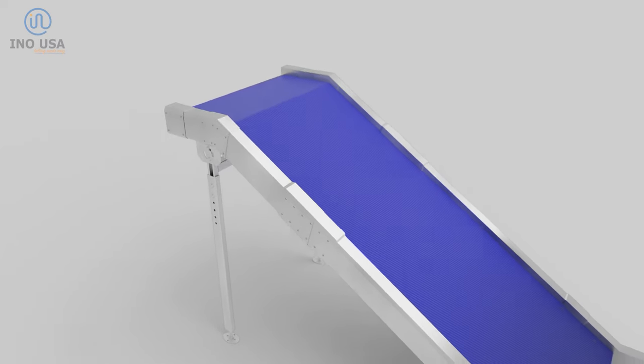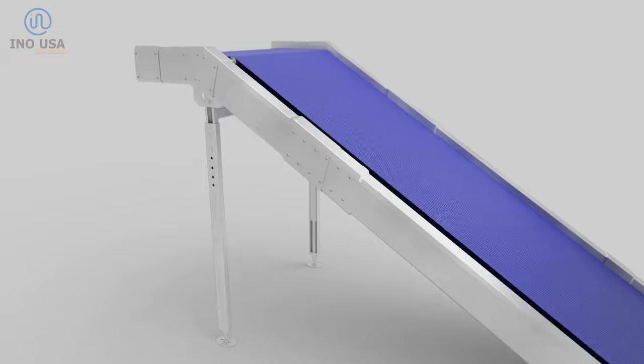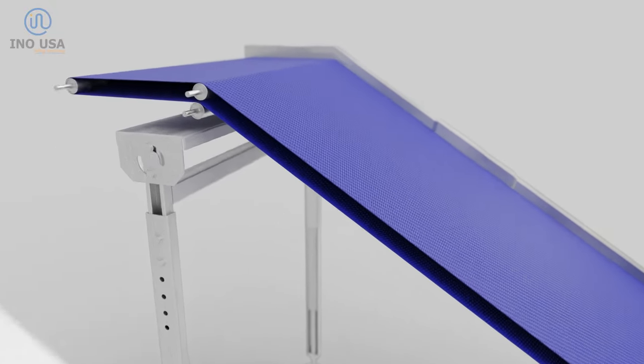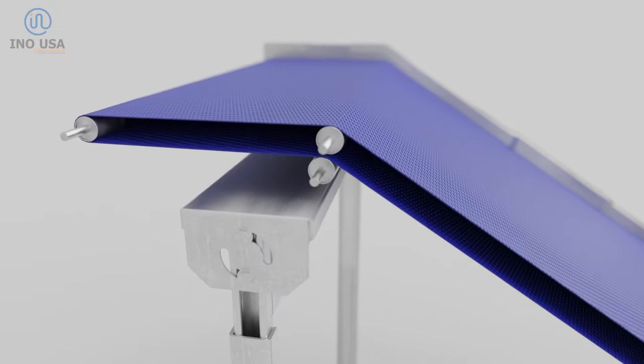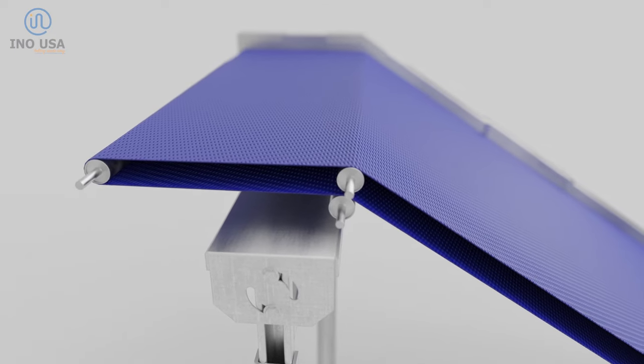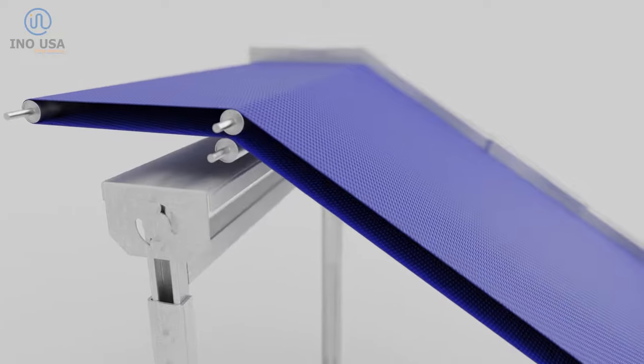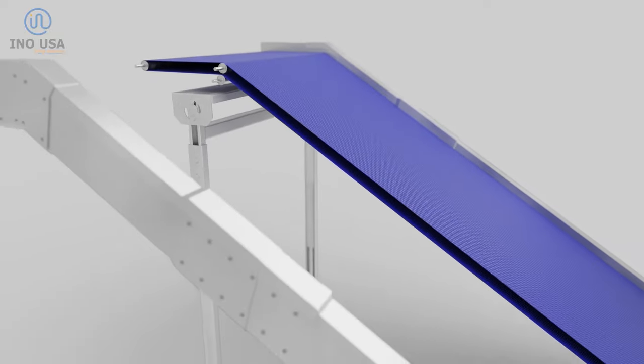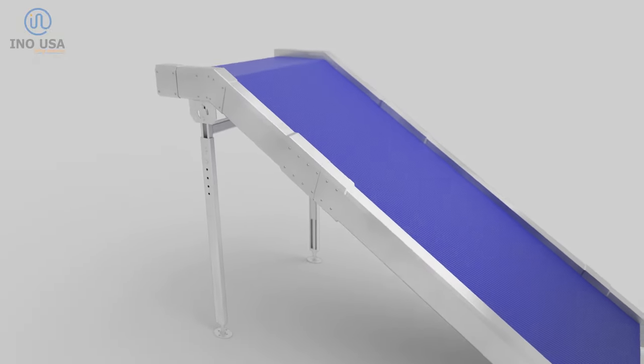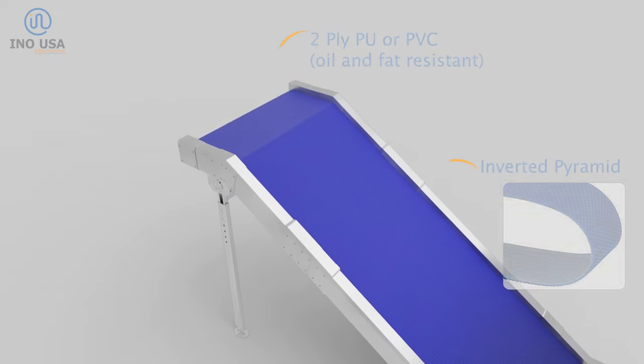The chunker belt is normally a 2-ply polyurethane belt or a 2-ply oil and fat-resistant PVC with an inverted pyramid top profile to provide grip on the incline conveying. The belt is usually blue or white in color, and like all belts on this application, it must be approved for direct contact with food.